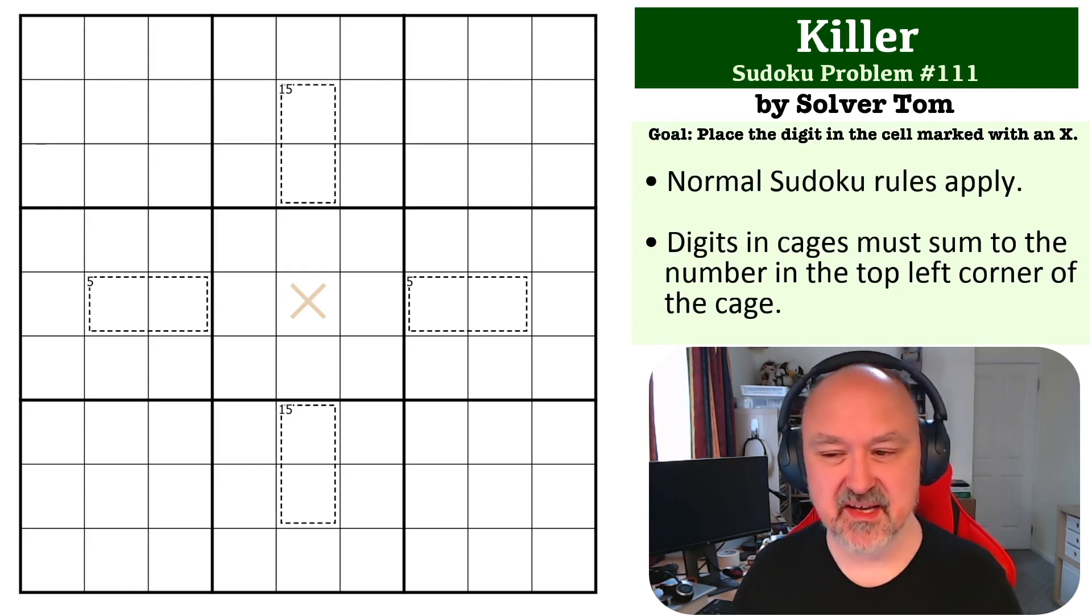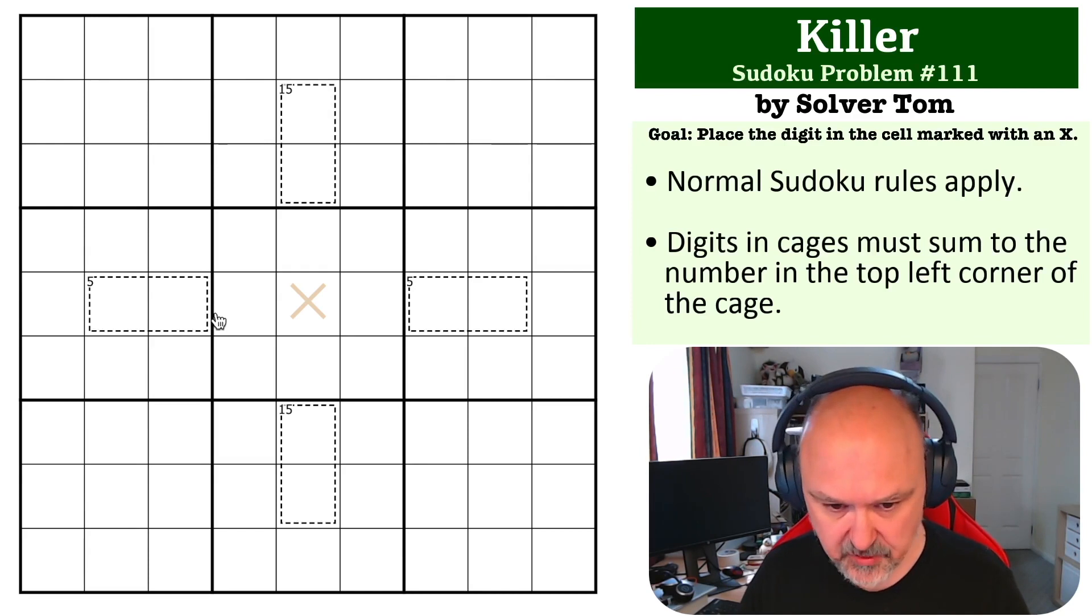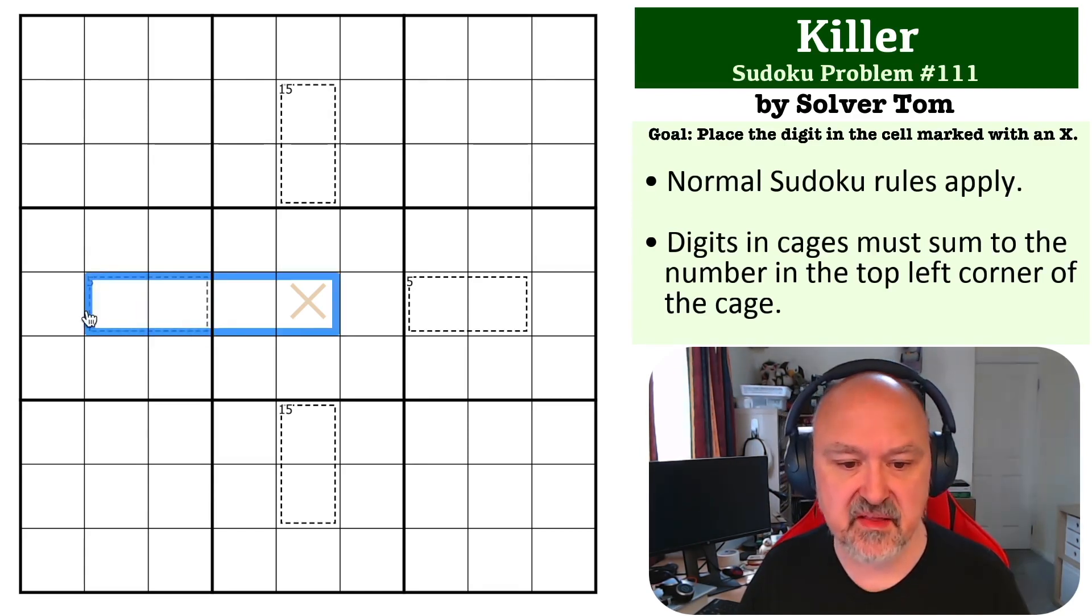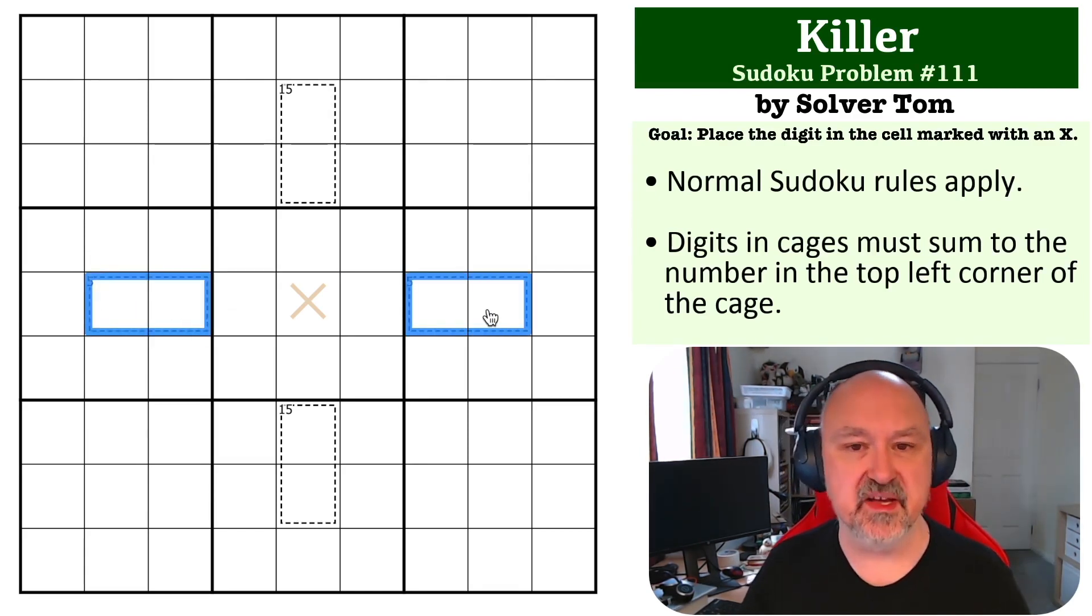Okay, so as I said, this one is pretty easy. What we need to do is look at the cages. In these five cages, there's only two ways to make five: either 1-4 or 2-3. So these are either going to be 1-4 or 2-3, which means 1, 2, 3, 4 are taken up.